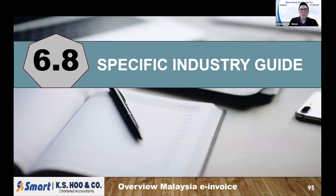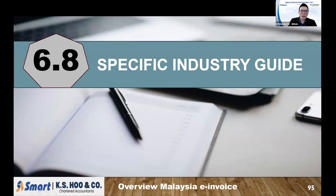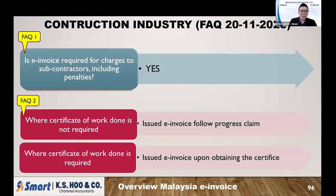There is also a specific industry guide. Income tax is supposed to issue specific industry guides for each type of industry — like construction and trading — to help businesses implement e-invoice more easily. Until today, only five industries have a guide available in the income tax portal. Two industry guides are highlighted here for reference. The first is the construction industry FAQ. Income tax's guide is issued as FAQ format. In the construction FAQ, there are four questions and four answers. The first question is whether a penalty charge requires an invoice. The answer is yes — if there are penalty charges to the subcontractor, including the penalty, you need to issue an invoice.